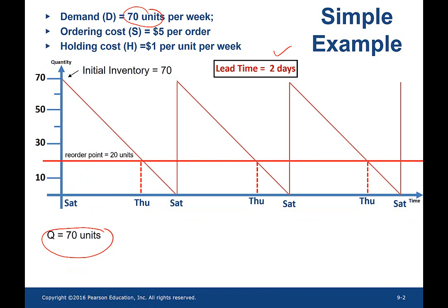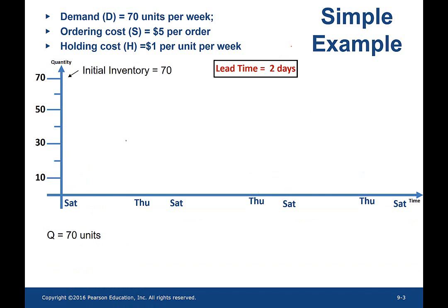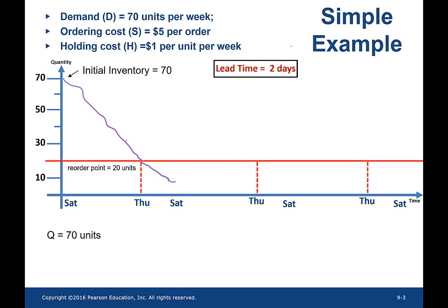Let us take a look at how this picture changes when the demand becomes variable. Following is how the inventory level decreases over a week. The wavy line indicates the demand varies from day to day. In this case, the first week has a low demand and the slope of the demand curve is less steep. In the first week, 20 units of on-hand inventory is sufficient for the buyer to address the demand during the lead time. The buyer has some amount of on-hand inventory when the order arrives.